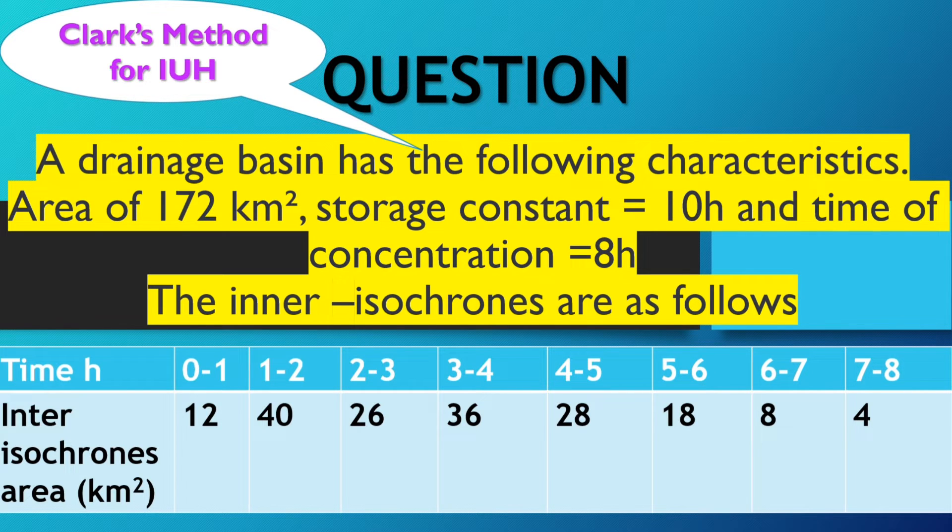The question is given here: a drainage basin has the following characteristics. Area of 172 km², storage constant equal to 10 hours, and time of concentration equals 8 hours. The linear isochrones are as follows. In the table, at time intervals of one hour, the inter-isochrones area are given in km².